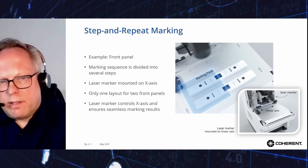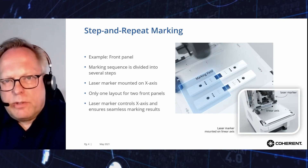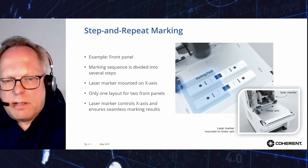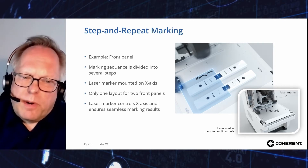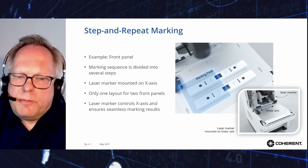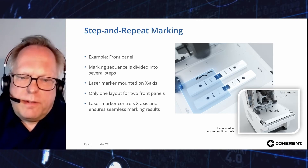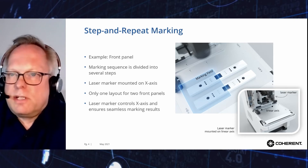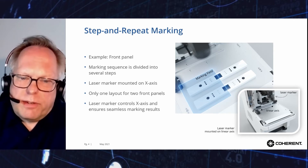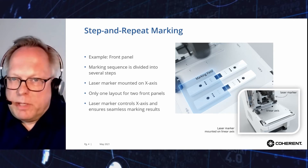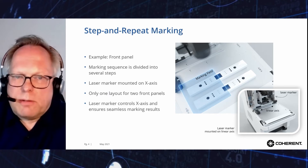Here is a practical example. Two panels of home appliances are loaded into the laser marking system, and the size of the marking field is indicated by the blue square. Obviously, the marking field is too small to allow marking the panels in a single step. The marking sequence must therefore be split up into two or three steps.